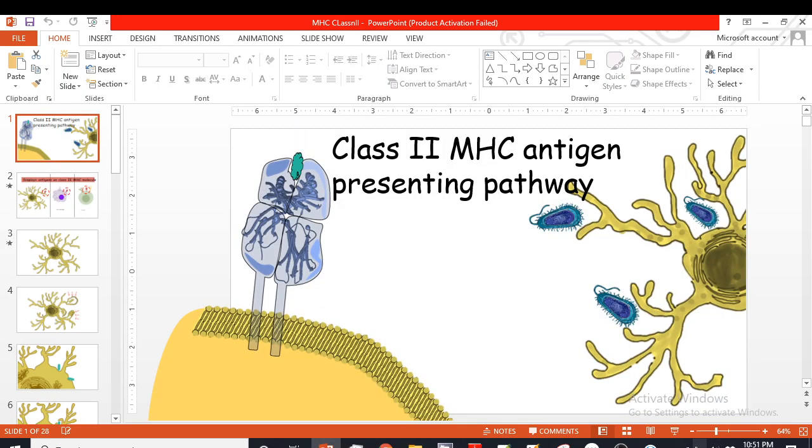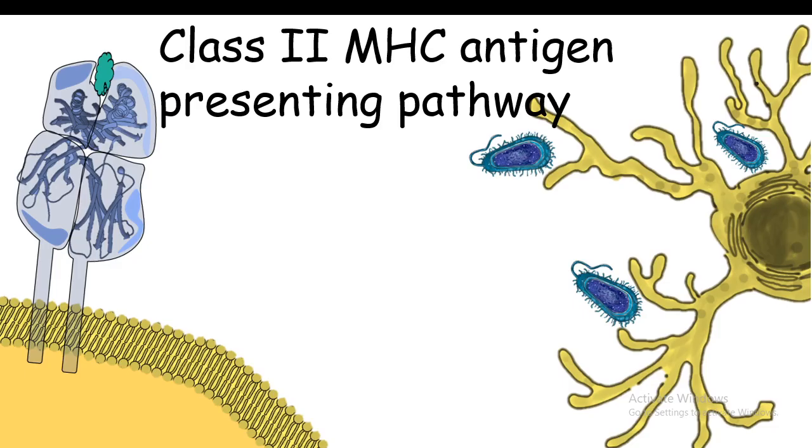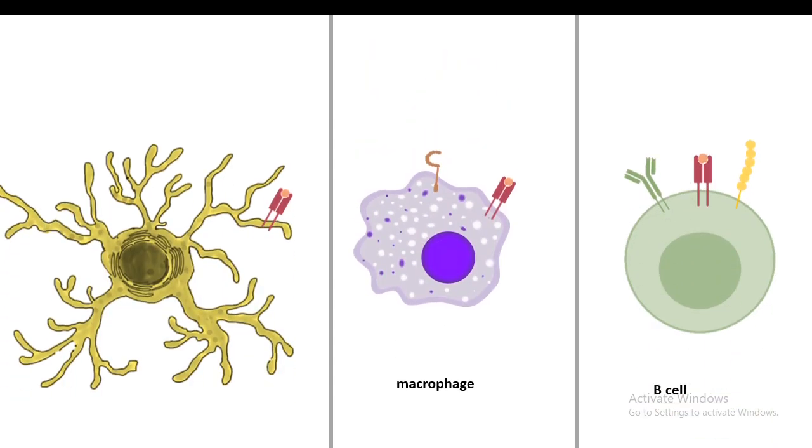Hi, in this video we are going to talk about class 2 MHC antigen presenting pathway. All the antigen presenting cells such as dendritic cells, macrophages, and B cells have one thing in common: they present their exogenous peptide on top of a class 2 MHC molecule.